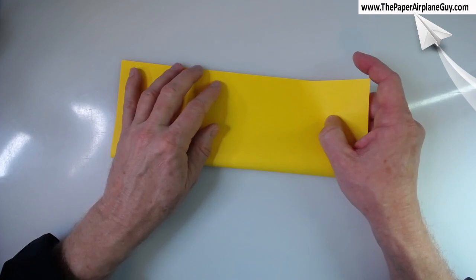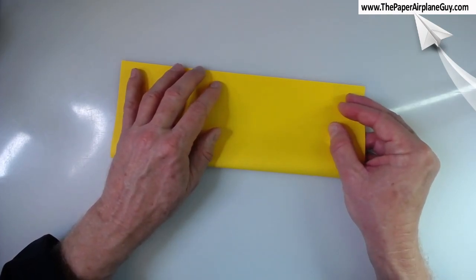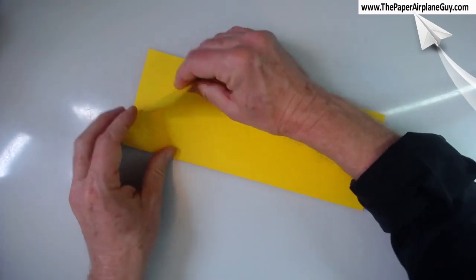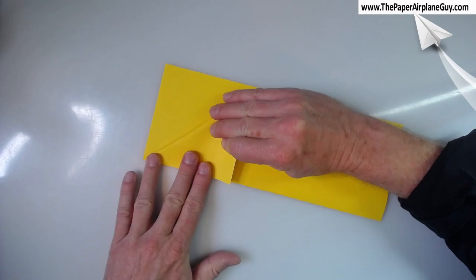Now, this is going to look very familiar. If you've done any paper airplane folding before, this is going to be really familiar. We're folding over the corners here.